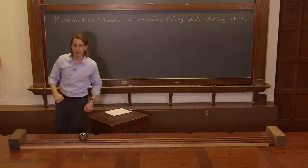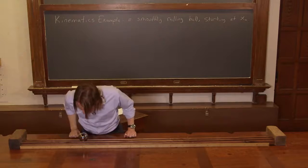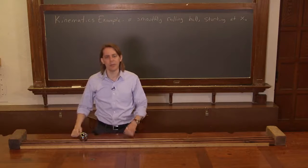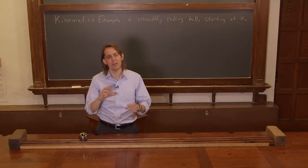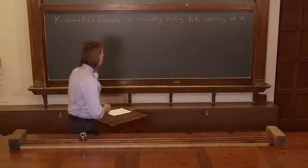Here it is sitting on the track, starting at 50 centimeters. So in this case, that is x-naught. X-naught means the position at a certain time, usually time equals zero.